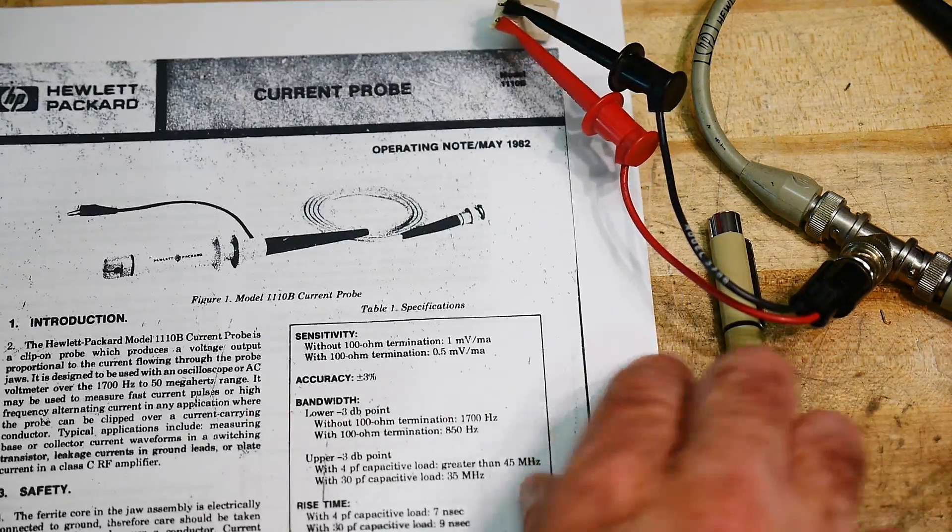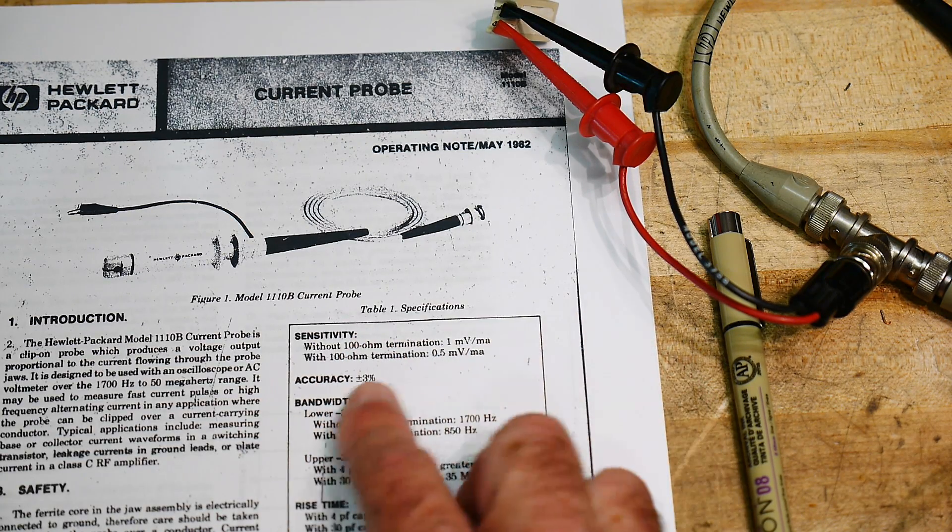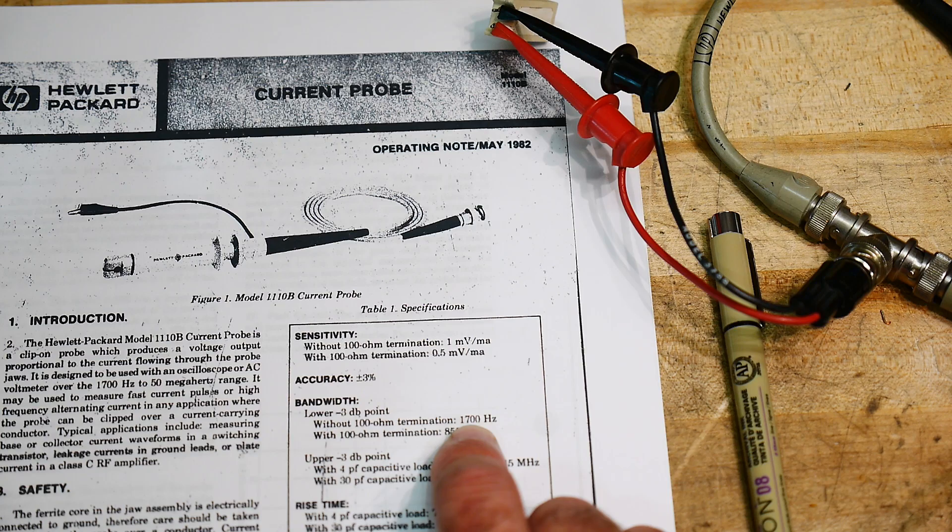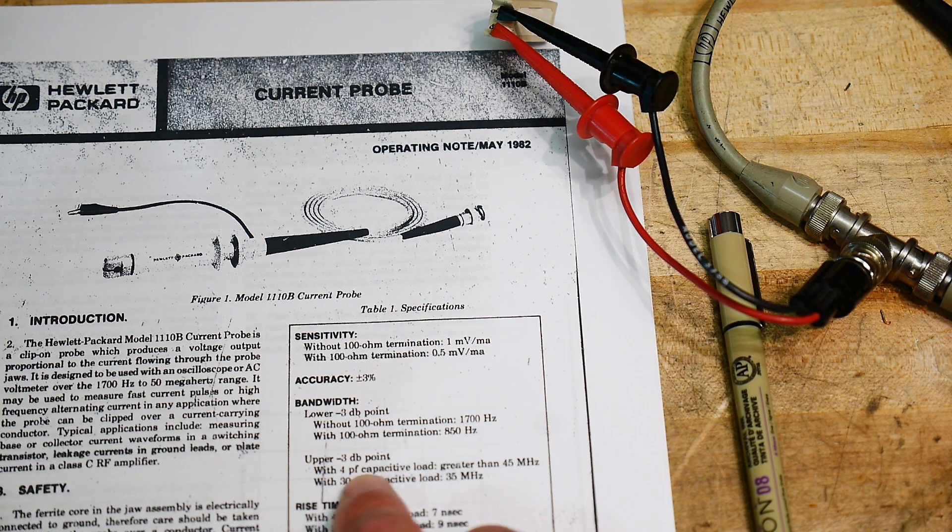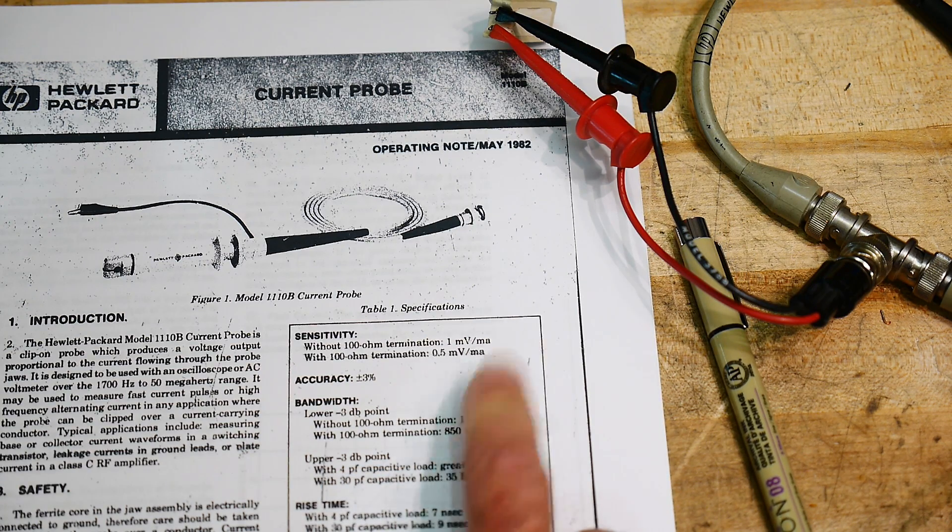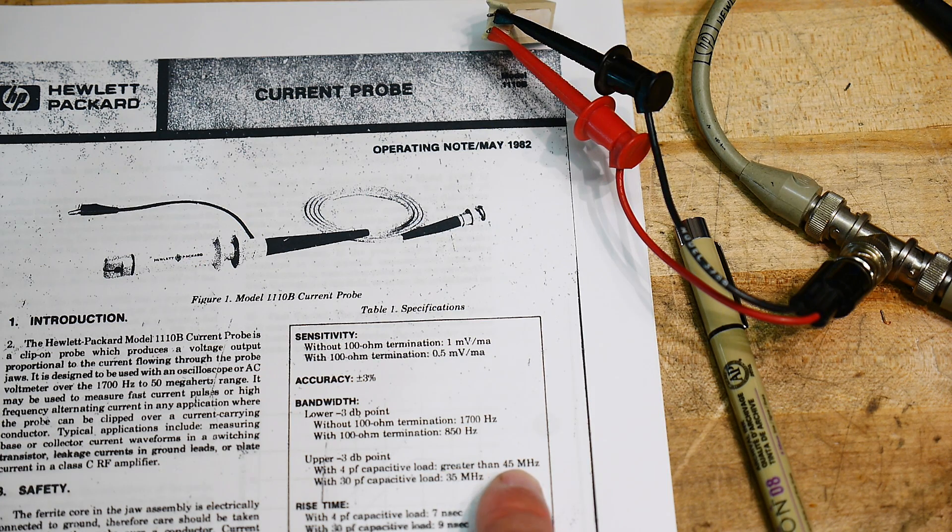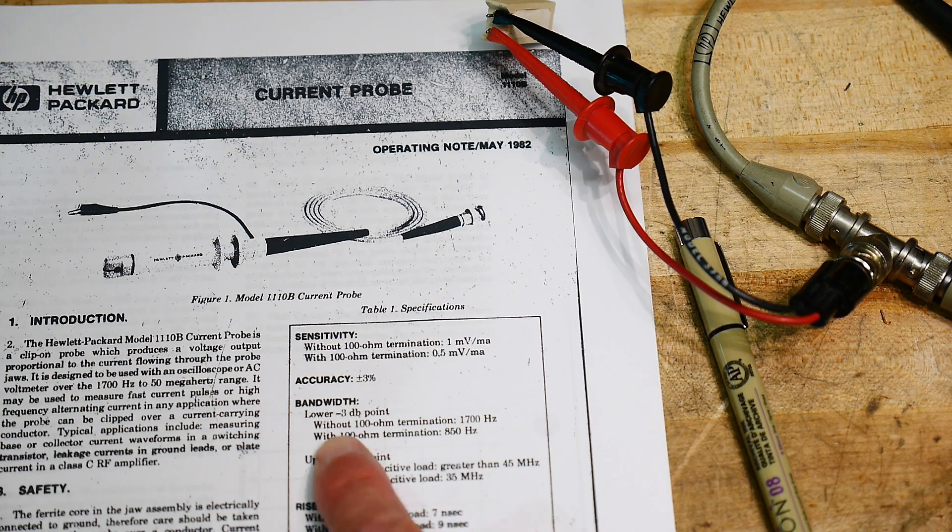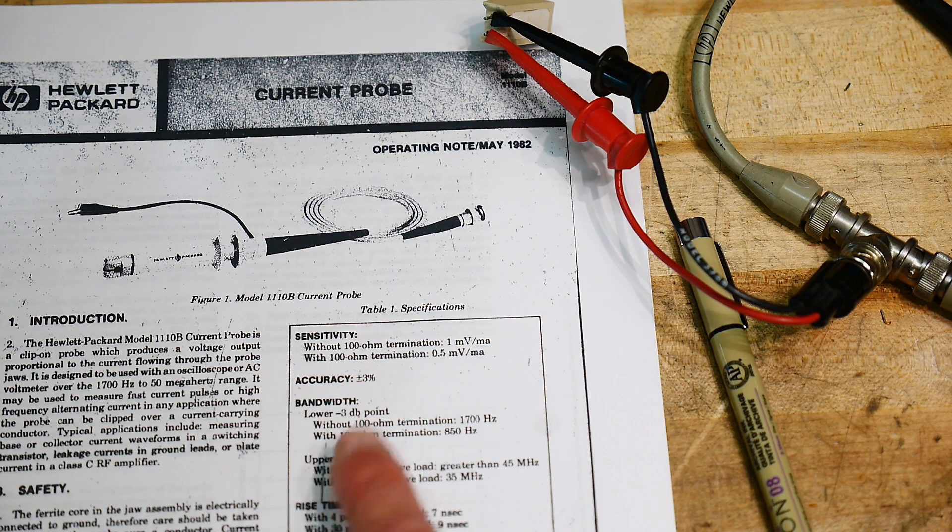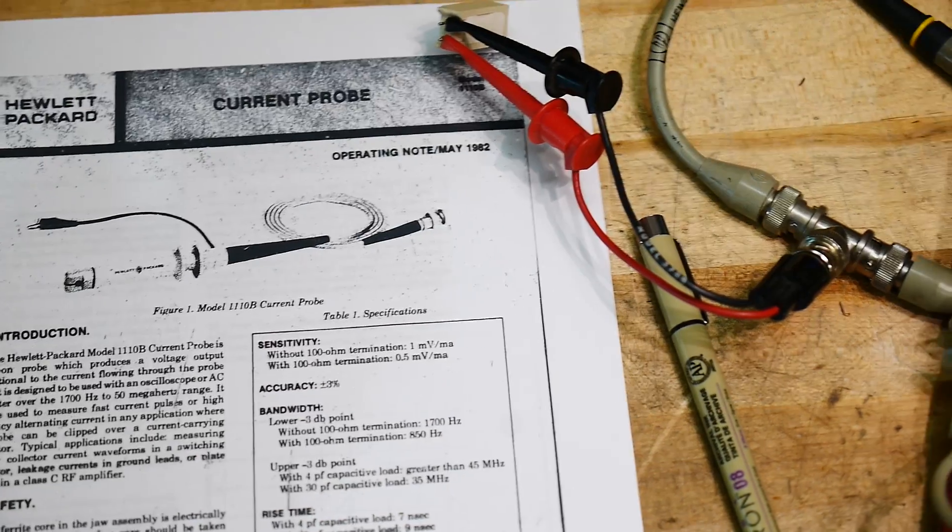Current probe data sheet. Yeah, so this current probe claims that it will operate down to 1700 hertz, which is pretty low. And its upper minus 3dB point is 45 megahertz. So this thing should be operated up, can operate all through the ham bands there up to 45 megahertz. And if it has a capacitive load, it only operates to 35 megahertz, but plenty fast enough, but that's a 3dB point. So what is the 3dB point? Well, this thing's going to roll off as we go up in frequency.